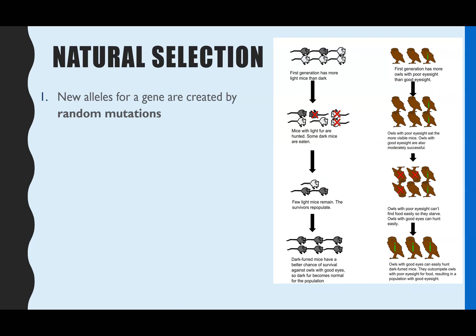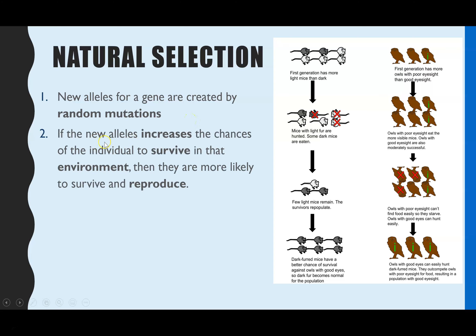Now the whole process of natural selection — we're going to link it to the example of fur colour in mice and vision ability in owls. As we go through, I'm highlighting the key marking points if you were to answer a long answer question: describe the process of natural selection. You always have to start by pointing out there is genetic diversity and what causes it. New alleles, which increase genetic diversity, are caused by random gene mutations. If the new allele created by a mutation increases the chances of survival for that individual in their particular environment, they're more likely to be able to reproduce.